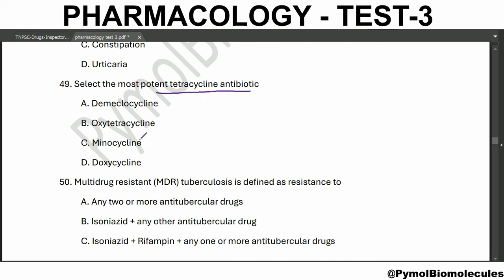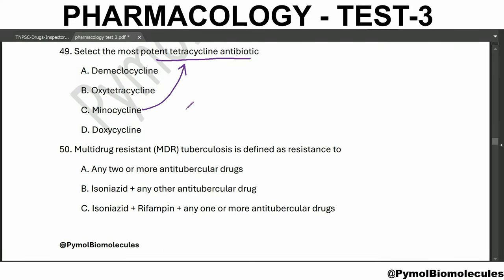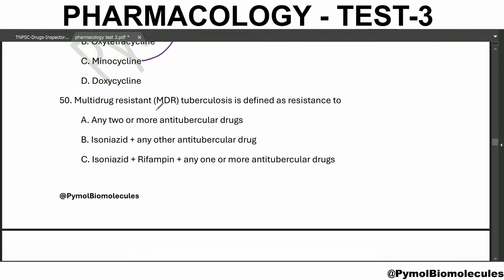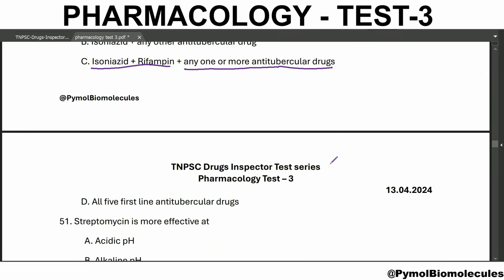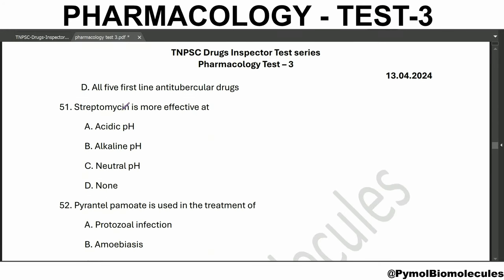Select the most potent tetracycline antibiotic - we have already seen that is minocycline. Multi-drug resistant tuberculosis is defined as isoniazid plus rifampicin plus any one or more of the antitubercular drugs. Streptomycin is more effective at alkaline pH. Pyrantel pamoate is used in the treatment of pinworm infection, and pyrantel pamoate is a dihydropyrimidine derivative.